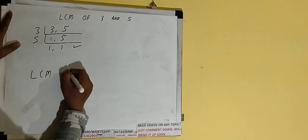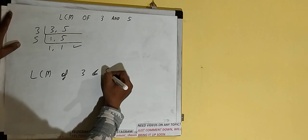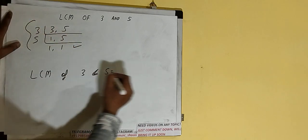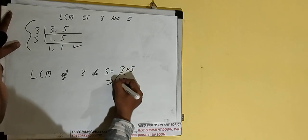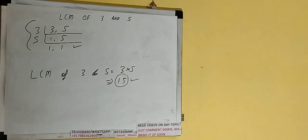That is LCM of 3 and 5 would be multiply whatever we have on the left hand side, that is 3 cross 5. The answer would be 15, or the LCM would be 15. So this is all.